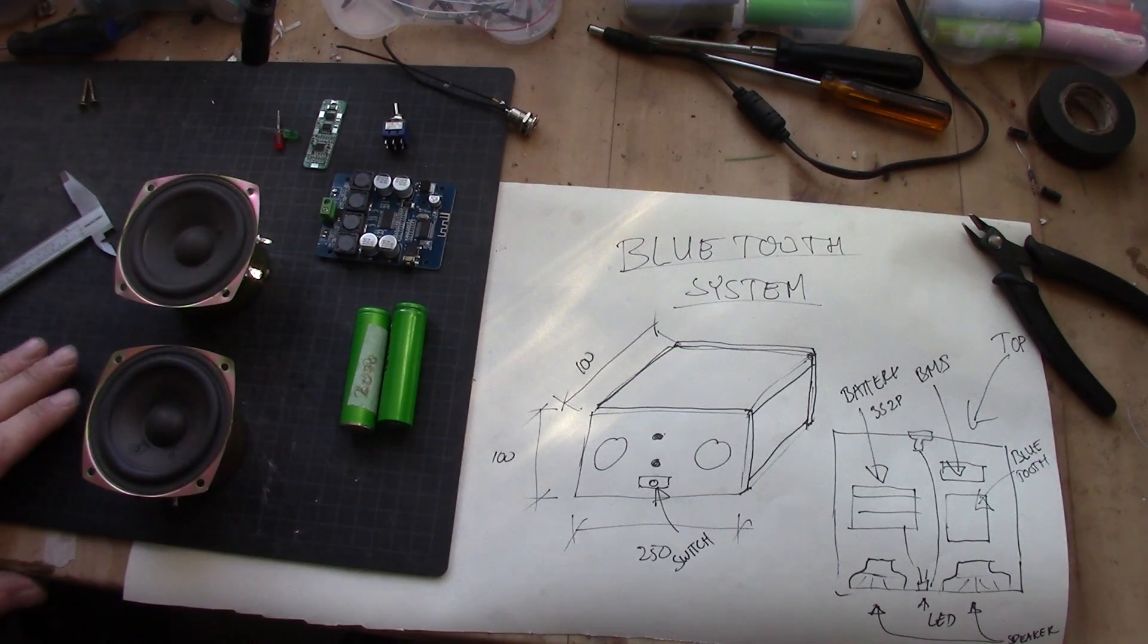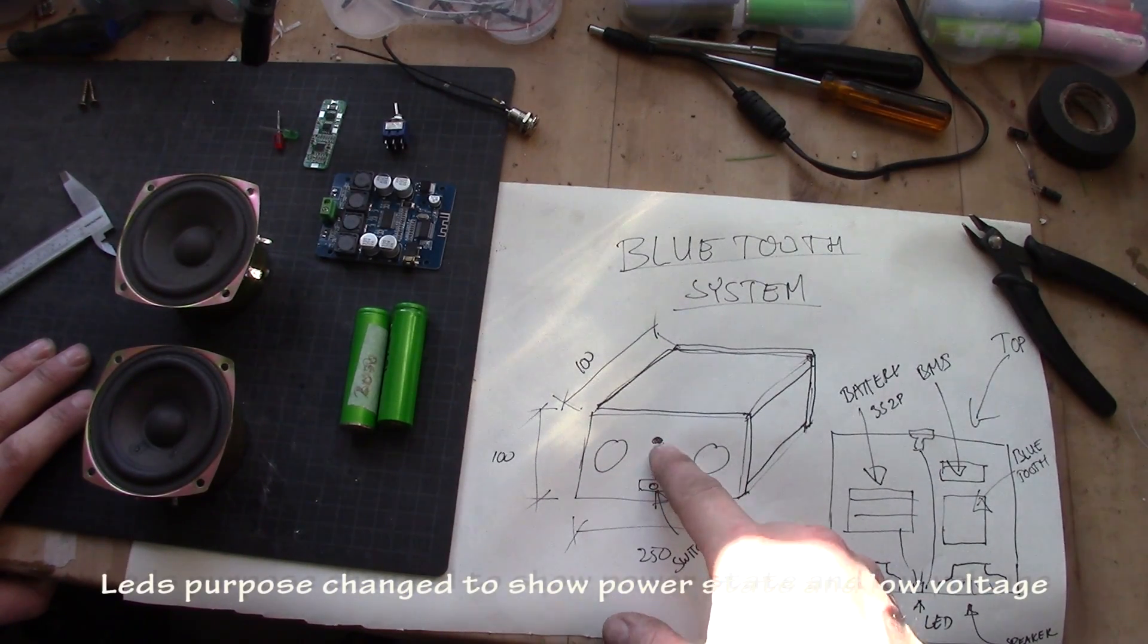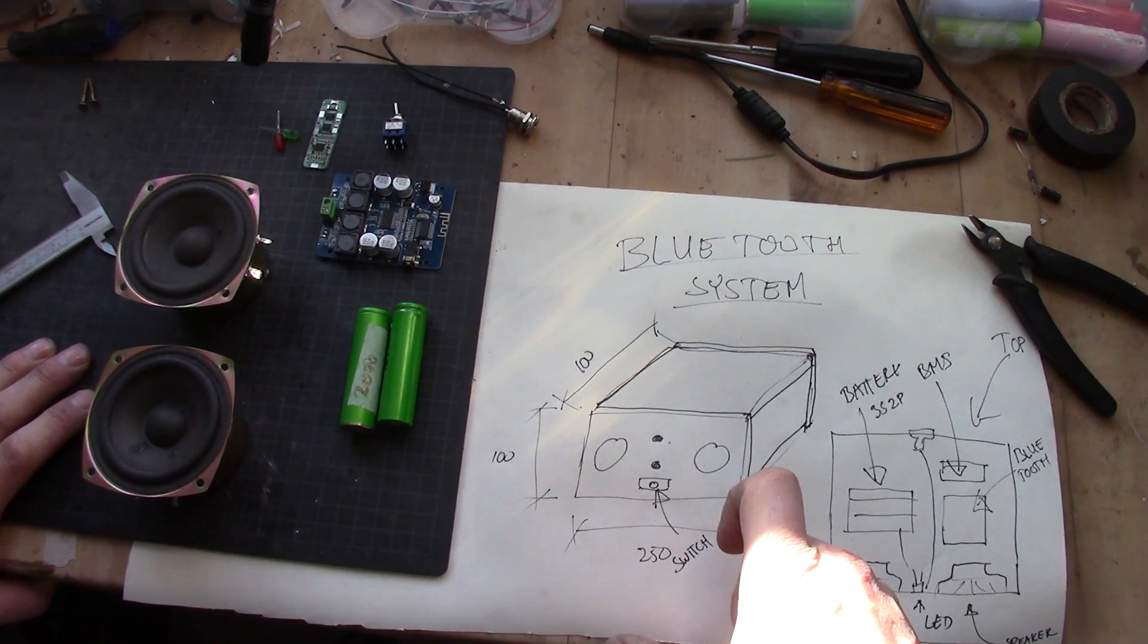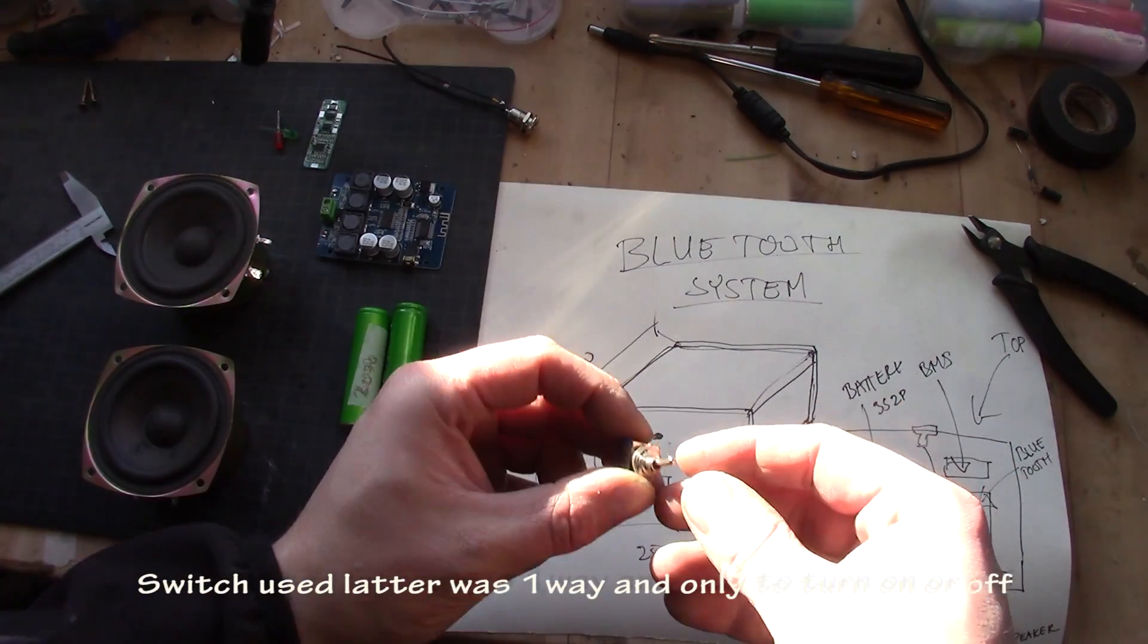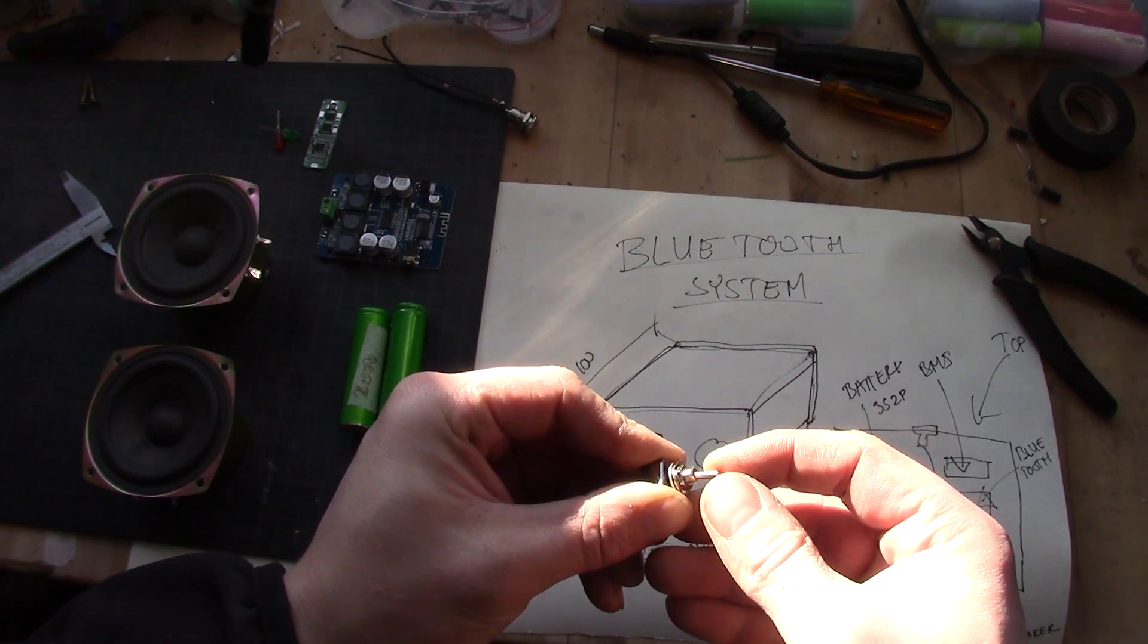So basically the system consists of the speakers in front, two LEDs that will show if it's turned on or if it's running on the battery. You have a switch here as well. The switch that will be used is this one, the two-way with the middle section.